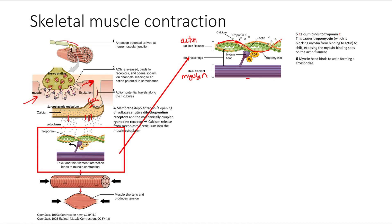The other thing to note is troponin C, and this is what calcium is going to bind to. It's easy to remember: calcium binds to troponin C. When calcium binds, it causes movement of tropomyosin, so the blocker gets out of the way and myosin finally gets attached to actin.